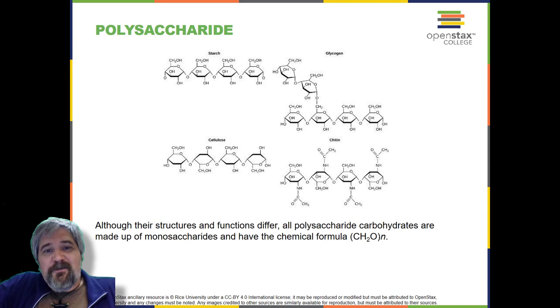Carbohydrates serve other functions in different animals. Arthropods, such as insects, spiders, and crabs, have an outer skeleton called the exoskeleton, which protects their internal body parts. This exoskeleton is made of the biological macromolecule chitin, which is a nitrogenous carbohydrate. It is made up of repeating units of a modified sugar containing nitrogen. Thus, through differences in molecular structure, carbohydrates are able to serve the very different functions of energy storage (starch and glycogen) and structural support and protection (cellulose and chitin).